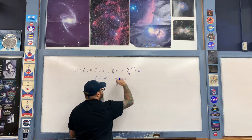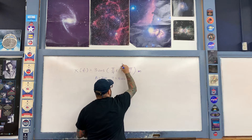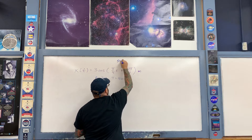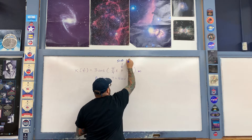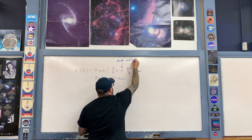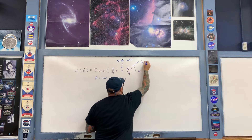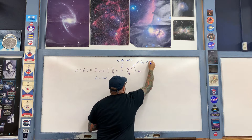First of all, the positive sign here means that we're going to shift the graph to the left, and then we shift by the phase amount.